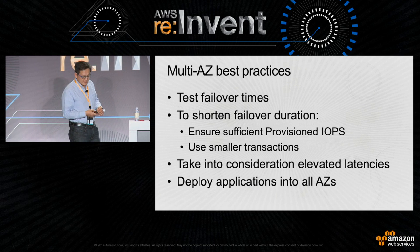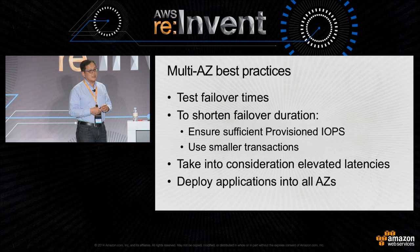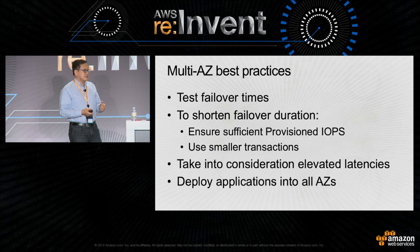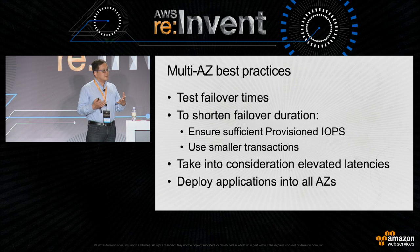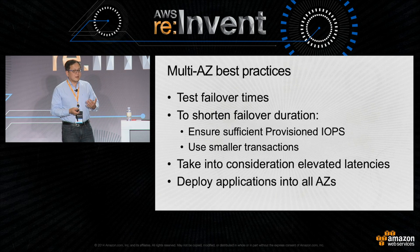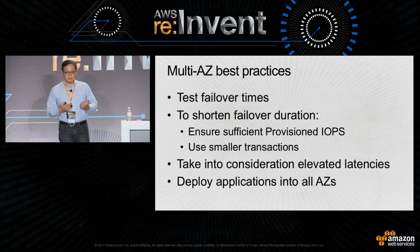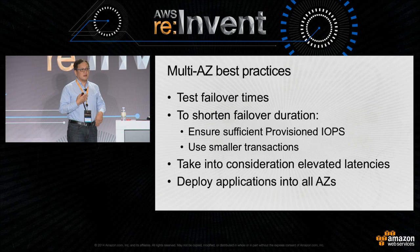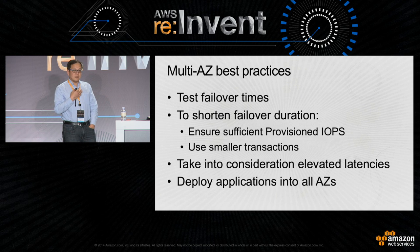Consider that there may be elevated latencies in your application, because RDS SQL Server is automatically replicating your data to a secondary database. However, the upside is that your data is being committed to two separate databases. Lastly, we recommend deploying your applications across all availability zones, so that if a particular availability zone goes down, the applications in the other zones can take over.